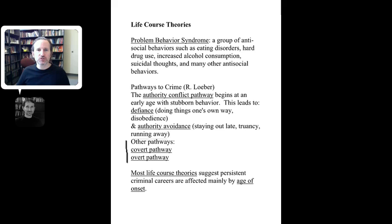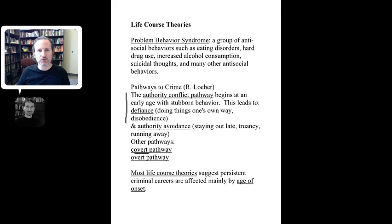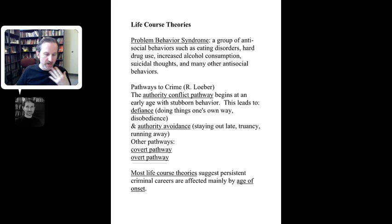Loeber mentions two other pathways: the covert pathway and the overt pathway. The covert pathway involves minor underhanded behavior — things like lying and shoplifting that leads to property damage, and can escalate to joyriding, passing bad checks, or stealing cars. The overt pathway means more prominent, more visible behavior — this is aggressive acts that begin with aggression, annoying people, bullying them, and then leading into violence like attacking someone and forced theft.